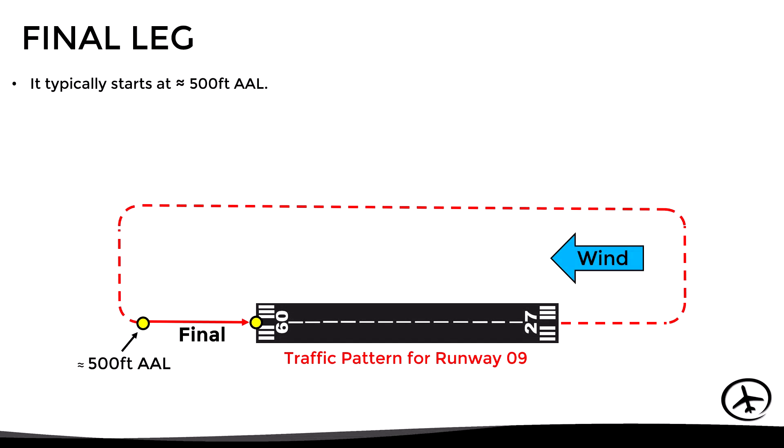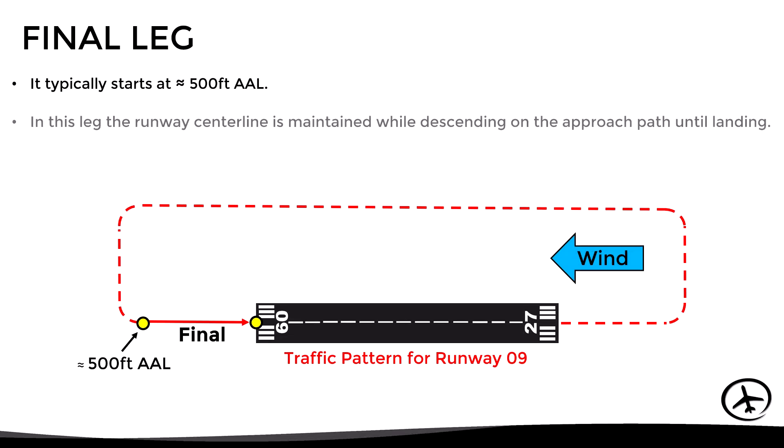This is where the aircraft starts the final leg, at about 500 feet above the airport level — however, this height may vary depending on the distance to the runway and the pilot's judgment. In this leg, the runway centerline is maintained while descending on the approach path until the aircraft lands, executes a go-around, or executes a touch-and-go landing.